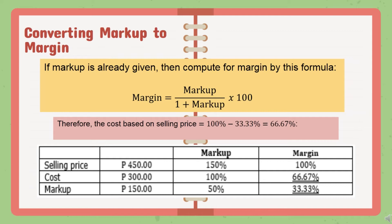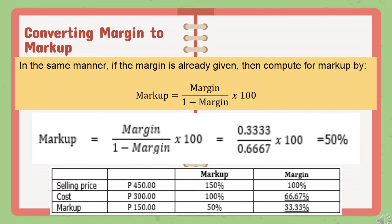Now let's find the cost converted to margin. Since the selling price is 100% in the margin framework, we subtract the converted margin from 100%. So 100% minus 33.33% gives 66.67%, which is now your cost as a portion of the selling price.